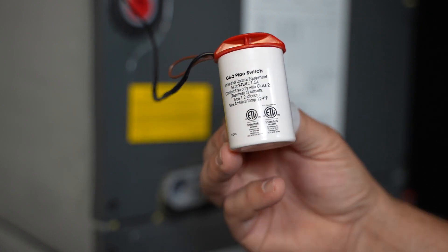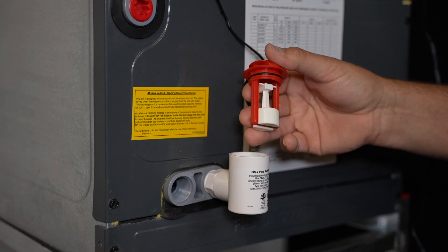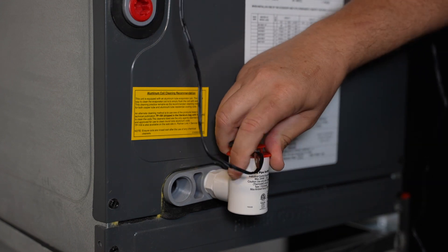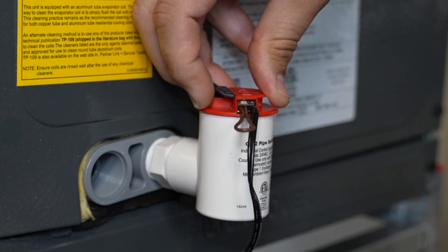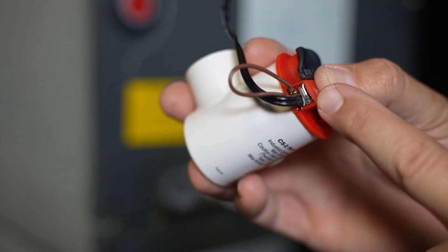The CS2 condensate overflow switch is for the secondary port of the primary pan on the air handler. The pull lever makes it easy to test functionality. The LED activates when the condensate line is blocked. It has built-in protection against power surges.